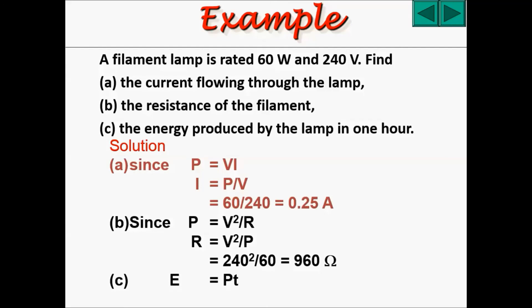For the energy produced by the lamp in one hour, we could use E equals to P times T, power times time. The power we know it to be 60 watts. However, the time taken, remember, you need to convert one hour into seconds, where seconds is the SI unit. Therefore, it should be 60 times 3600, which gets you 216,000 joules.